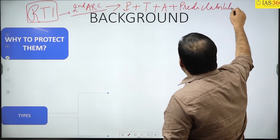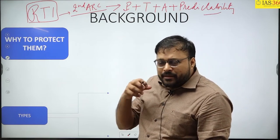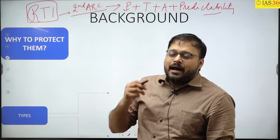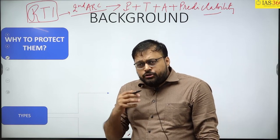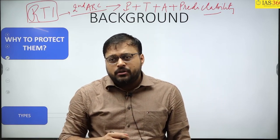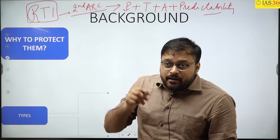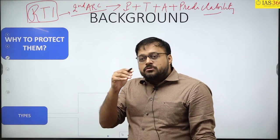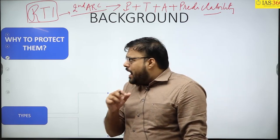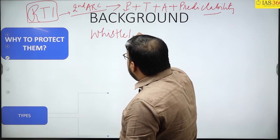The Second ARC says RTI depends on four pillars: the first is participation, the second is transparency, the third is accountability, and the fourth is predictability. With the help of RTI, many RTI activists have revealed information, but the question arises — why will people reveal information when there is a threat to their life? In this context, we see the importance of protection of the whistleblower.